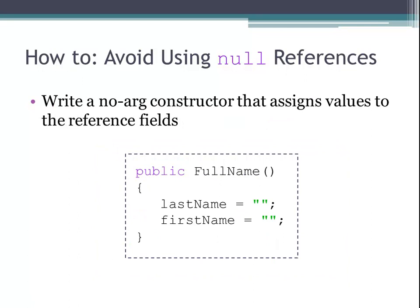Another way to avoid using null references is to write a no-arg constructor that assigns values to the reference fields. Here we have our public fullName constructor which assigns values to firstName and lastName variables. I hope this video helped you become more familiar with aggregate classes. Good luck!